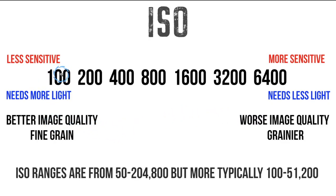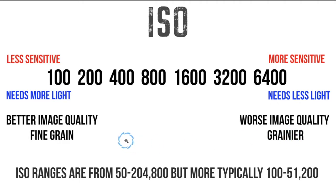The trade-off is that at ISO 100 you're going to get the best image quality and less grain — or in digital, less noise. As you move up the scale you get worse image quality, meaning a grainier or noisier image. We don't really have film grain in digital images, so we now call that noise. Just because the scale says 'worse image quality' at 6400, that is really dependent on your camera.